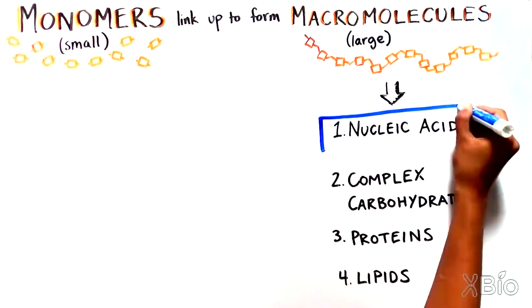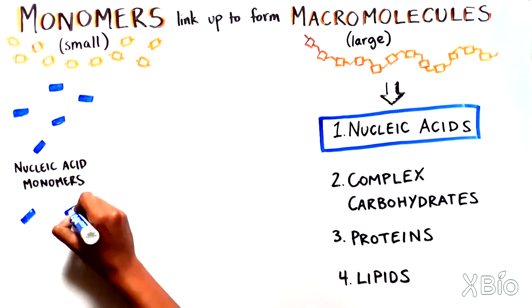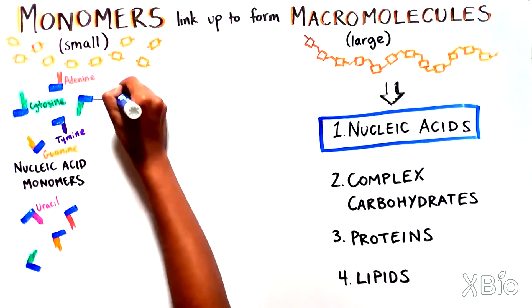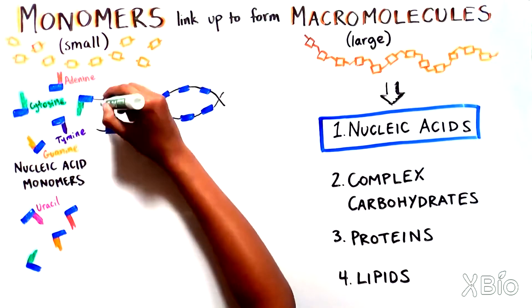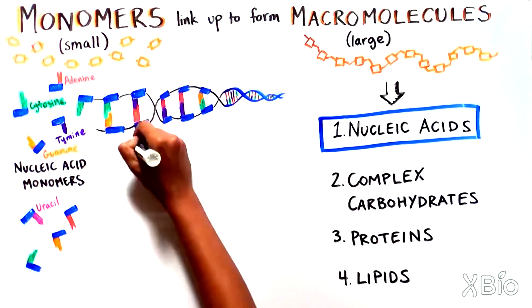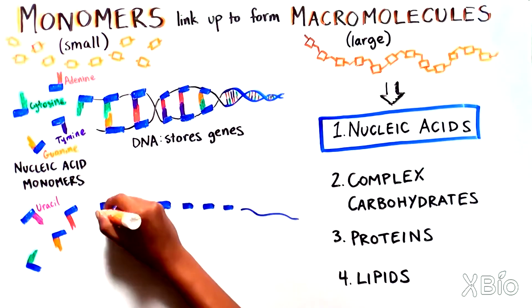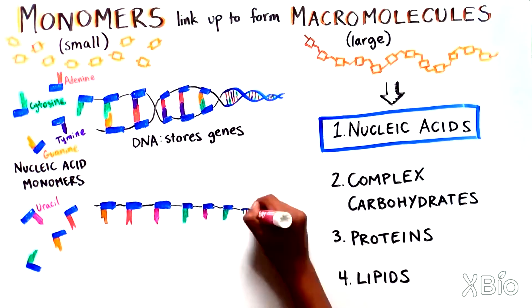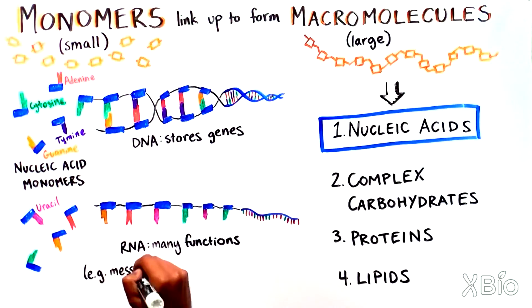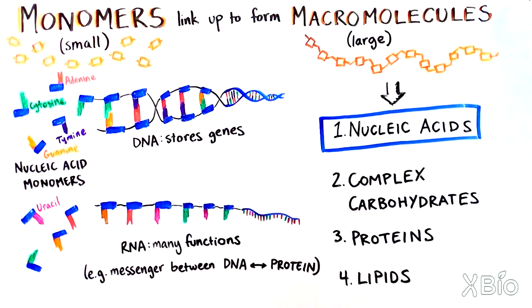As we mentioned, nucleotides can string together to form nucleic acids, which come in two types. DNA, deoxyribonucleic acid, which stores our genes, and RNA, ribonucleic acid, which has many functions, including acting as a messenger between the DNA code and the production of proteins.